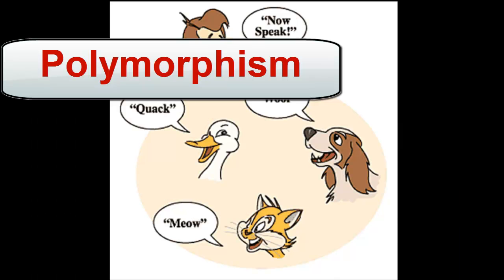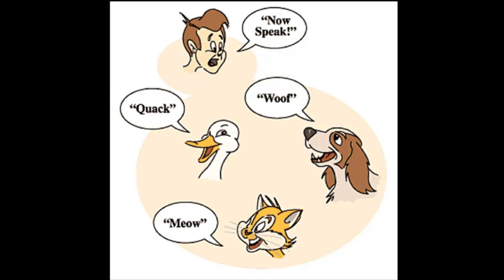The second concept is polymorphism. It means taking many different forms. Polymorphism is the ability of one object to be treated and used like another object. For example, we treat a duck as an animal, not just as a duck.